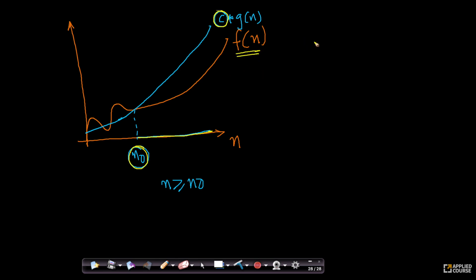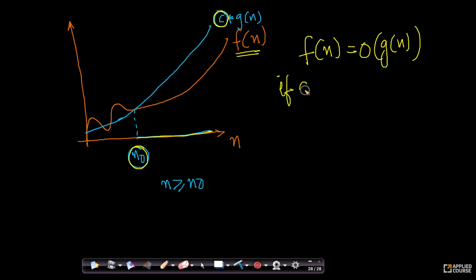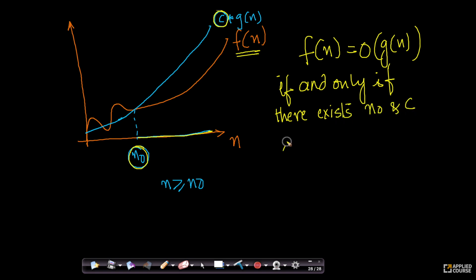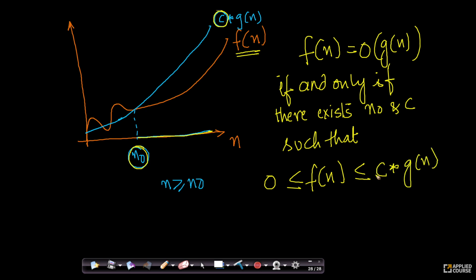We state that f of n is order of g of n if and only if there exist two constants n0 and c such that f of n is always greater than or equal to 0, and f of n is always less than or equal to c multiplied by g of n, for all n greater than or equal to n0.